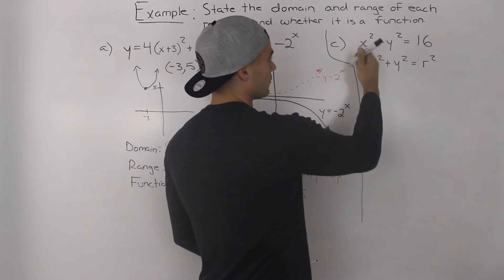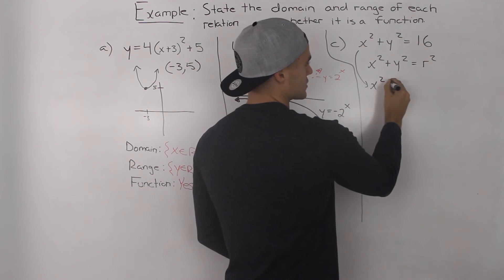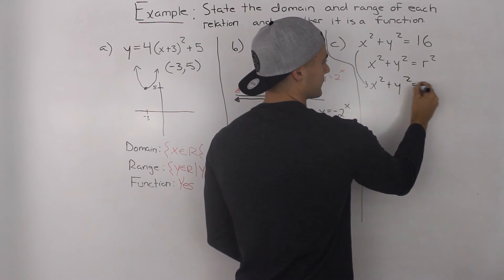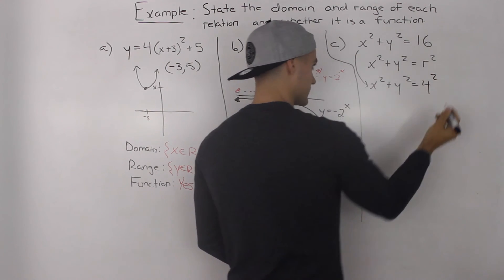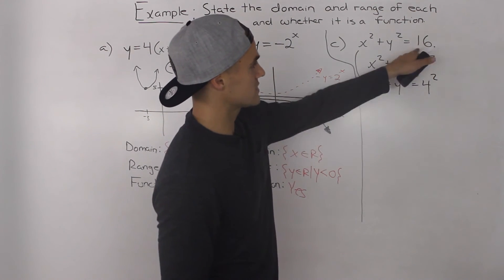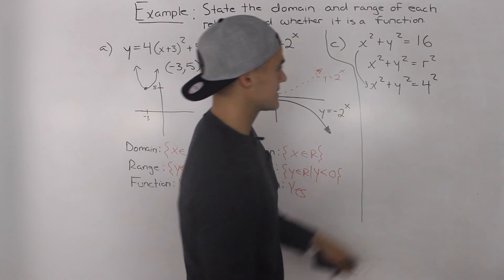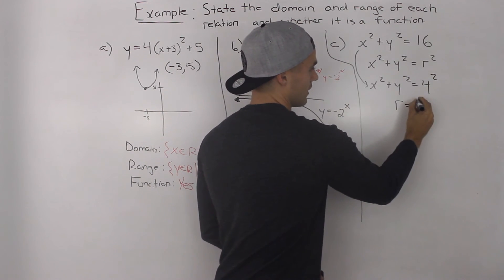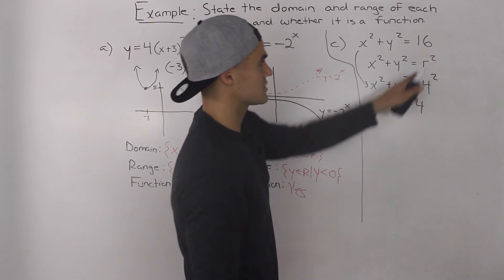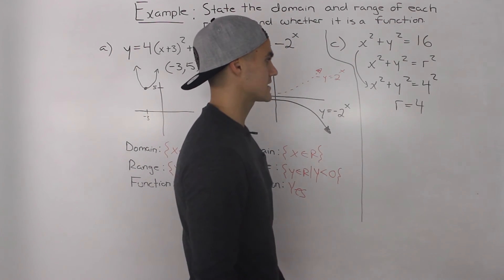So this here we can rewrite as x squared plus y squared is equal to the square root of 16, which is 4 squared. Right? 4 squared is the same as 16. So we can tell that the radius of this circle here is 4. It's just the square root of 16.